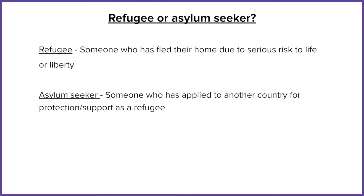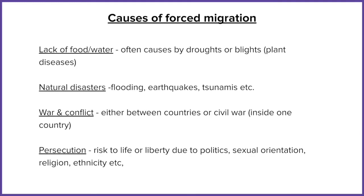But why do people flee their homes? Well, it's mainly due to factors that are fully beyond the control of the people. For example, a lack of food or water, starvation, drought. Lack of food might come about because of a blight, which is a disease of crops, or droughts coming from intense periods of hot weather and no rain, leading to no water, which can then also lead to a decreasing amount of crops. So people have to move to find new sources of food and water.